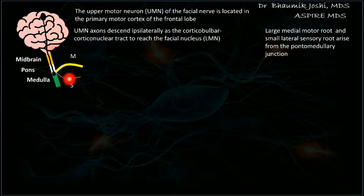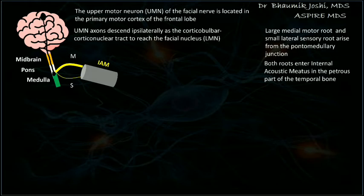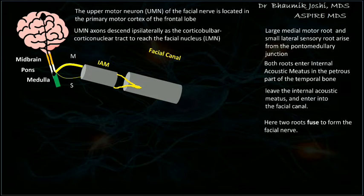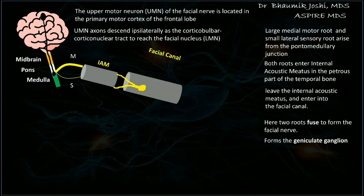Both of these roots enter the internal acoustic meatus, and after exiting from the internal acoustic meatus they enter the facial canal. Within the facial canal they fuse to form the facial nerve, which has both the motor and sensory roots together, and then they form the geniculate ganglion.